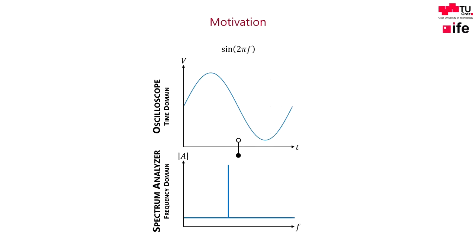As long as we deal with single sinusoidal signals the world seems pretty easy. For instance, a 1 MHz sinusoidal input signal causes a frequency peak at 1 MHz.